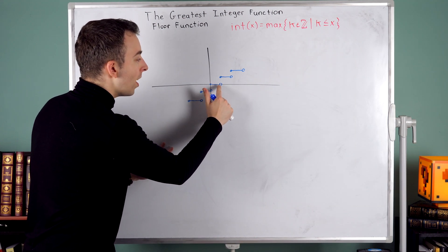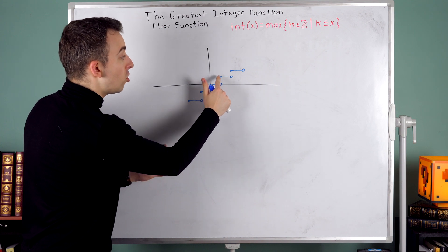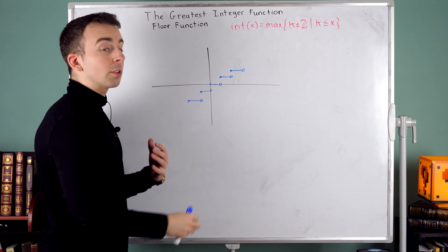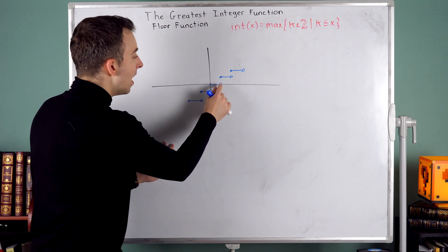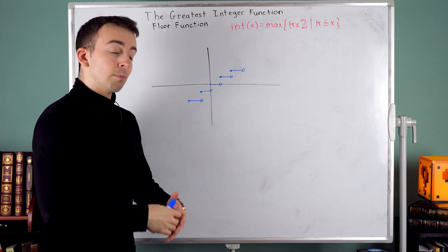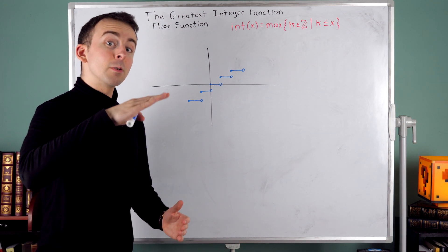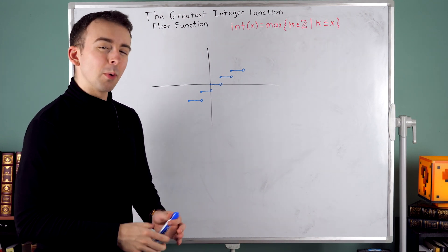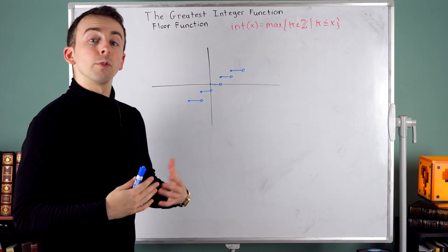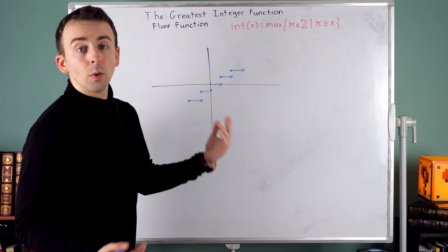But once we get to one, all of a sudden, the function jumps up to a value of one, which is why there's an empty circle there at x equals one. And we can see it jumps into that filled in circle. So like 0.999, that rounds down to zero. But when we finally get to one, then int of one or the floor function of one is one.